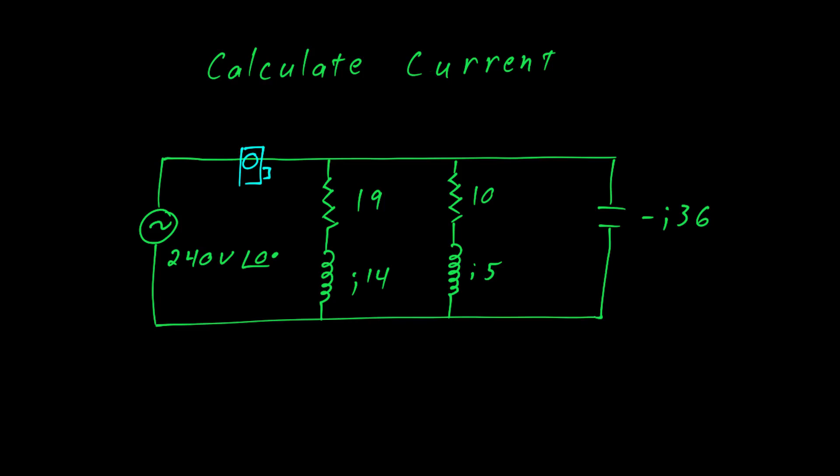In this problem we're asked to calculate the total current as measured by the amp clamp on this line. The circuit consists of several parts. We have a 240 volt source, this is a motor, this is another motor with a higher horsepower, and over here is a power factor correction capacitor.